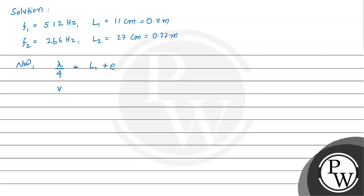So we can write v divided by 4f1 equals L1 plus E. This is equation 1. Similarly for the second case, v divided by 4f2 equals L2 plus E. This is equation 2.